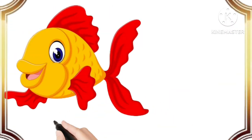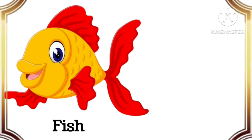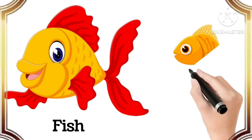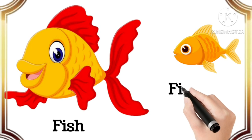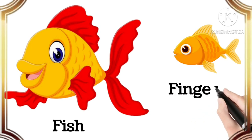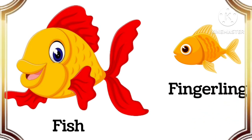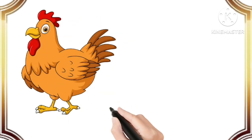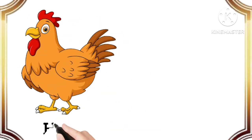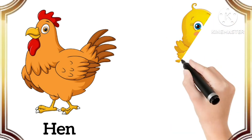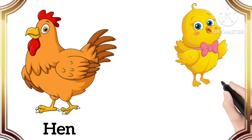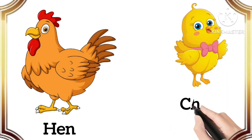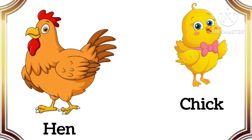Fish. The baby of fish is called fingerling. Fingerling. Hen. The baby of hen is called chick. Chick.